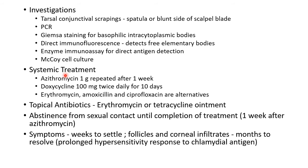For systemic treatment of adult chlamydial conjunctivitis, azithromycin 1g should be given and repeated after 1 week. An alternative is doxycycline 100mg twice daily for 10 days — doxycycline is avoided in pregnancy, breastfeeding, and children under 12 years. Other alternatives include erythromycin, amoxicillin, and ciprofloxacin. Topical antibiotics used include erythromycin or tetracycline. There should be abstinence from sexual contact until completion of treatment. Remember that symptoms take weeks to settle, whereas follicles and corneal infiltrates take months to resolve, due to prolonged hypersensitivity response to chlamydial antigen.